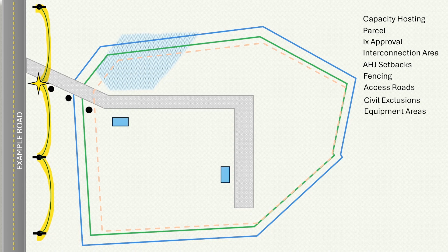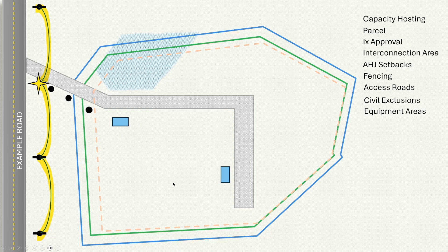Next up is equipment areas — making sure that we leave space for major electrical equipment. This could be as large as a substation or smaller pads. We want to locate them in strategic locations that are near the access road and not too far in a corner where they're hard to reach. We also want to space them relatively evenly throughout the site so that we're making long runs in medium voltage cable, not DC string wire, combiner box output wire, or low voltage AC conductors.